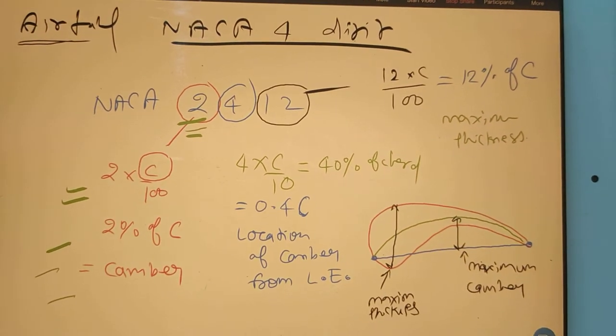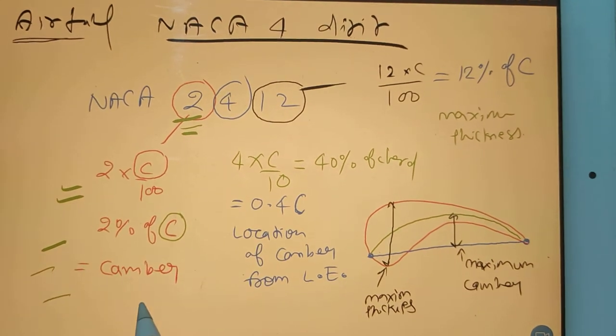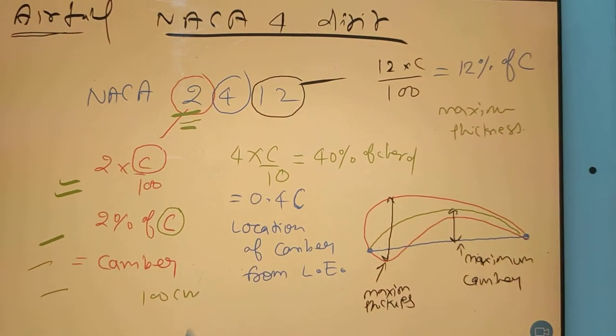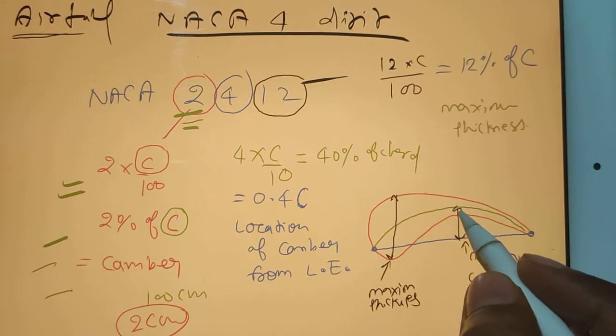Right, correct. So it means if your chord is, suppose your chord is 100 centimeter, then only 2 centimeter will be your camber, this part.